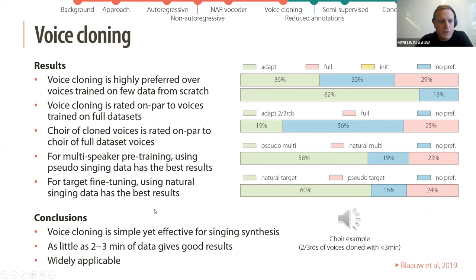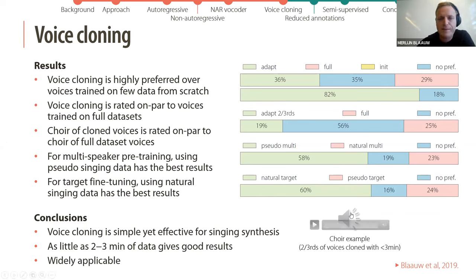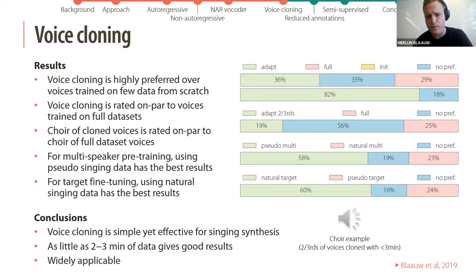The conclusions are that voice cloning is simple yet effective for singing synthesis, as little as two to three minutes of data gives reasonable results, and it's quite widely applicable. Here is a short example of choir synthesis with 12 voices, two-thirds of which are cloned on less than three minutes of data.